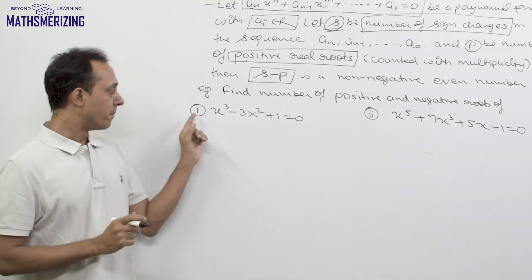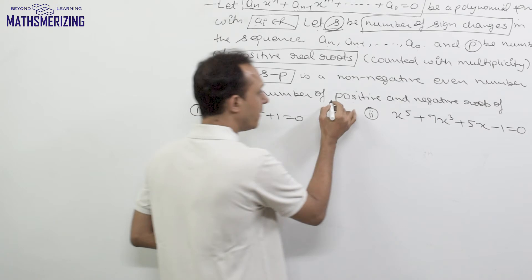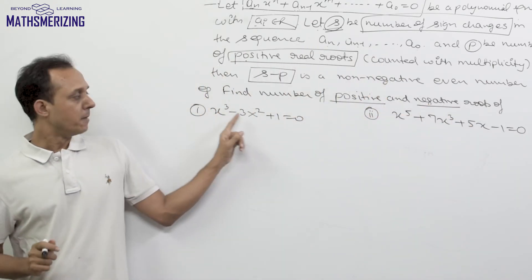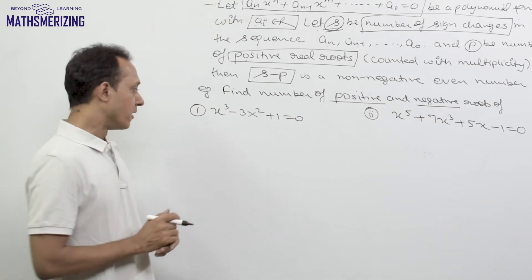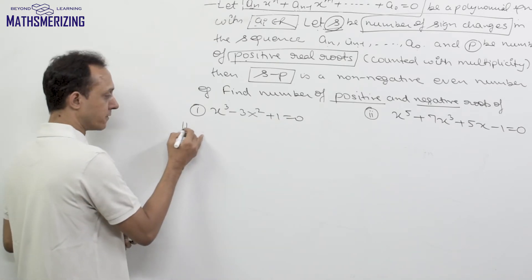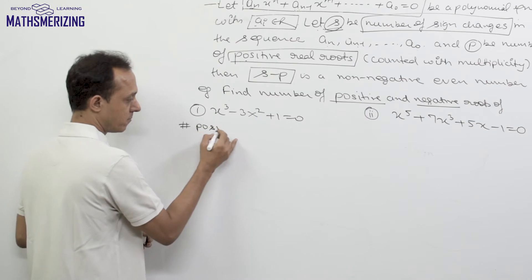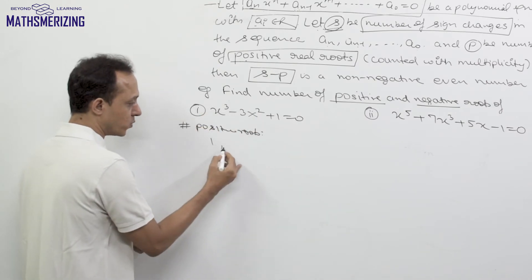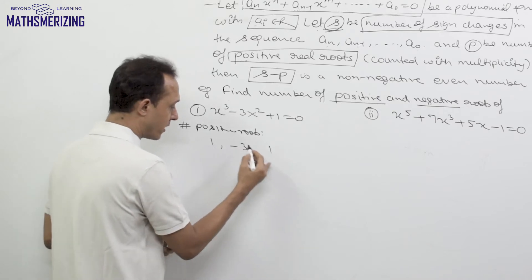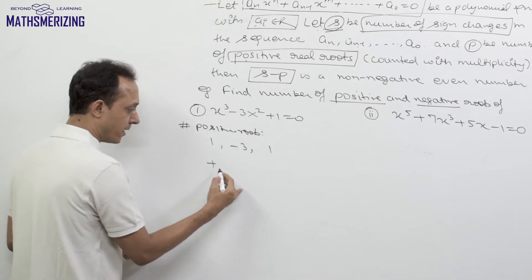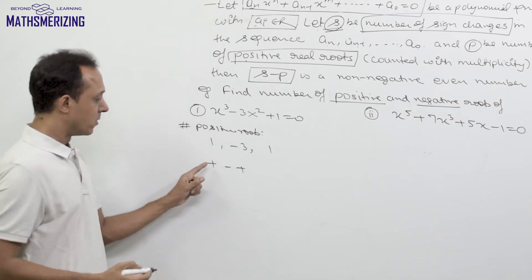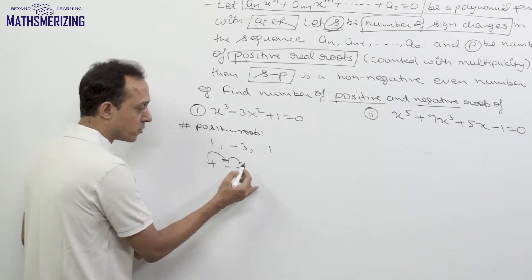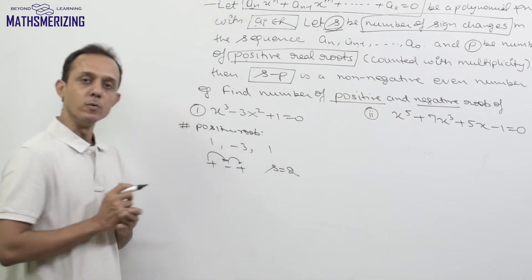Let's take an example. Say we have to find the number of positive and negative roots for the equation x³ - 3x² + 1 = 0. For positive roots, I'll write the sequence of signs: the coefficients are 1, -3, and 1, giving signs plus, minus, plus. I see a sign change from plus to minus, and then from minus to plus.